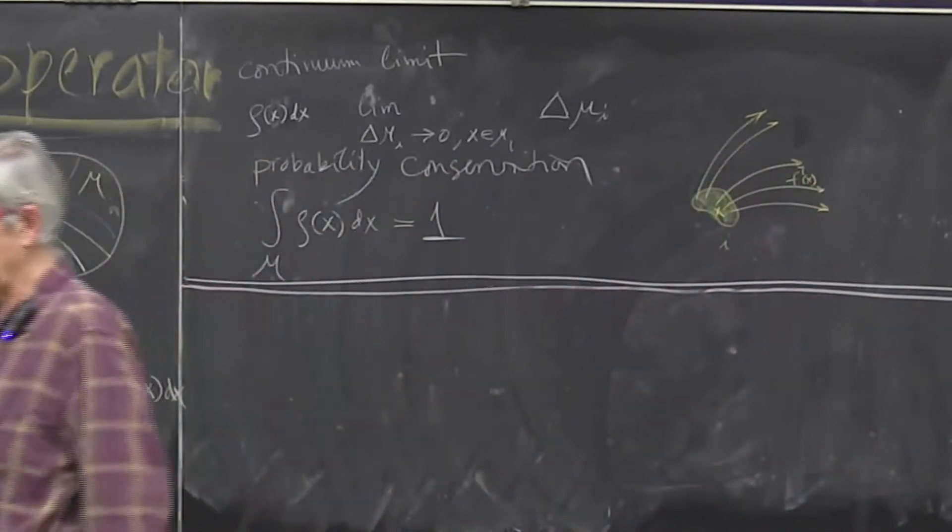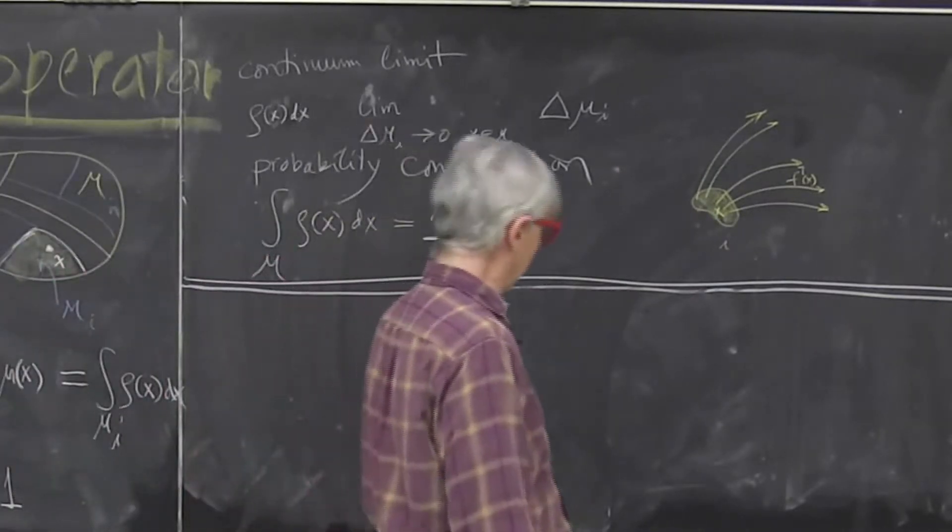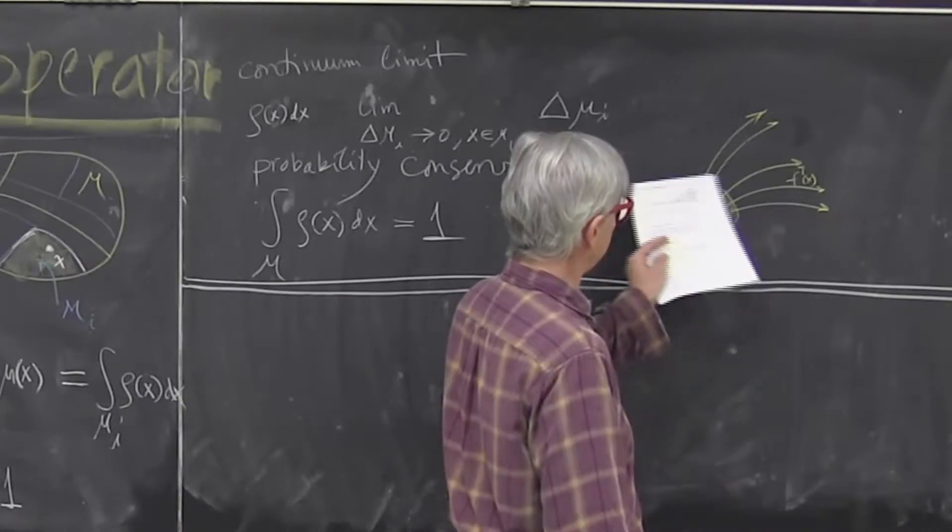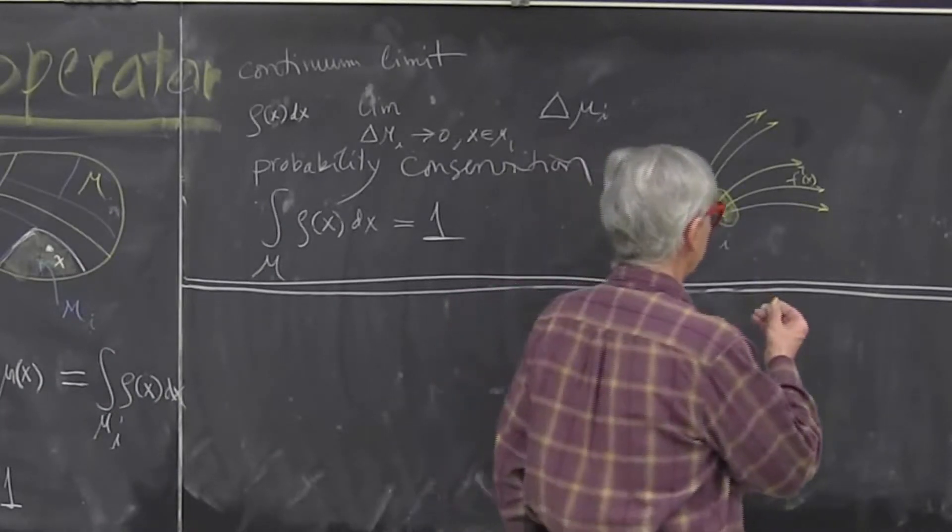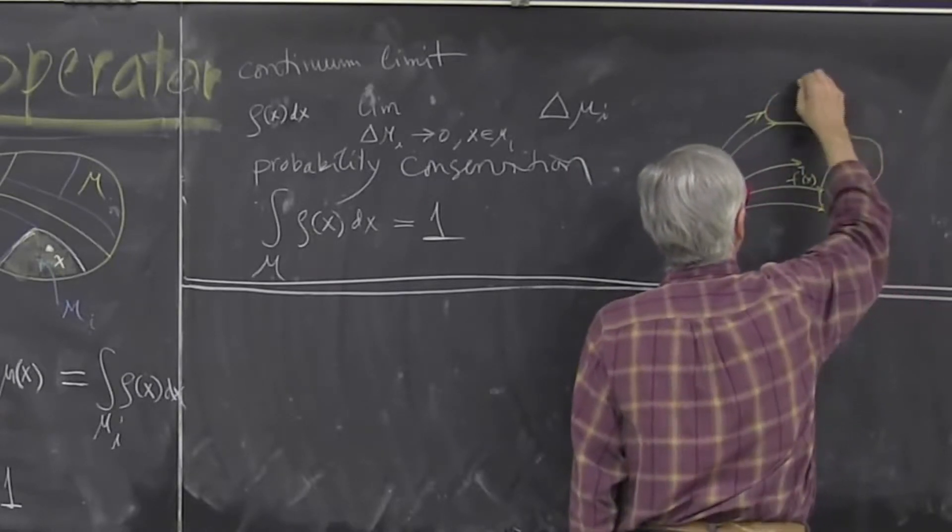So every point in this volume in time t ends up someplace. Now if our evolution is smooth, so we don't slice the world as we do it,